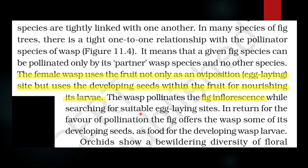In NCERT chapter 11, Organism and Population, under the topic of Mutualism, there is an example: the female wasp uses the fig fruit not only as an oviposition site — that is, an egg-laying site — but also uses the developing seed within the fruit for nourishing its larva. The fig wasp pollinates the fig inflorescence while searching for a suitable egg-laying site.